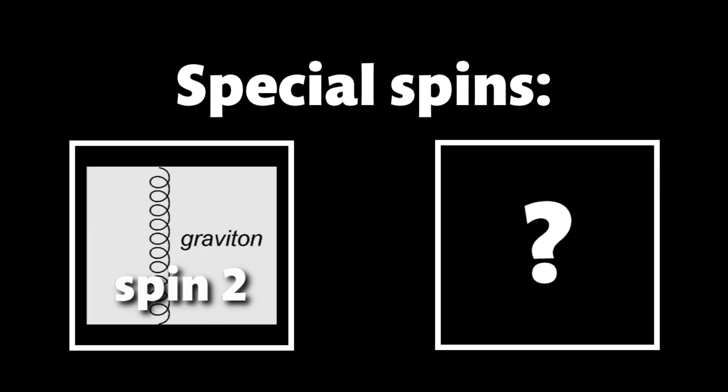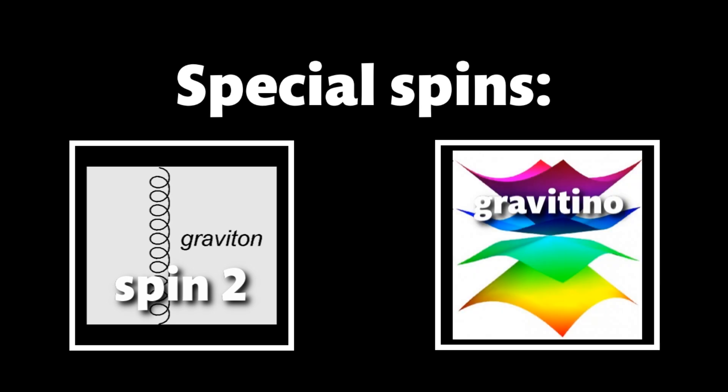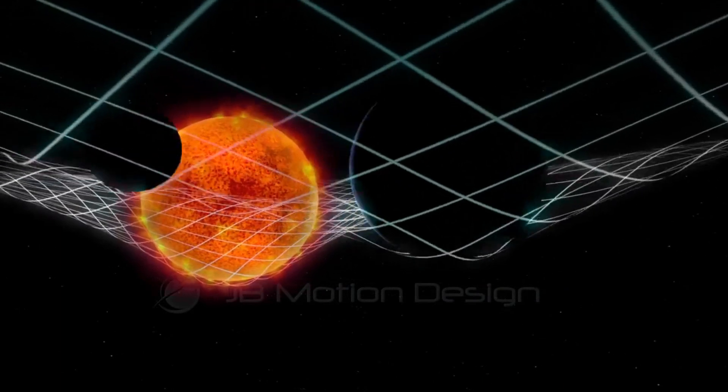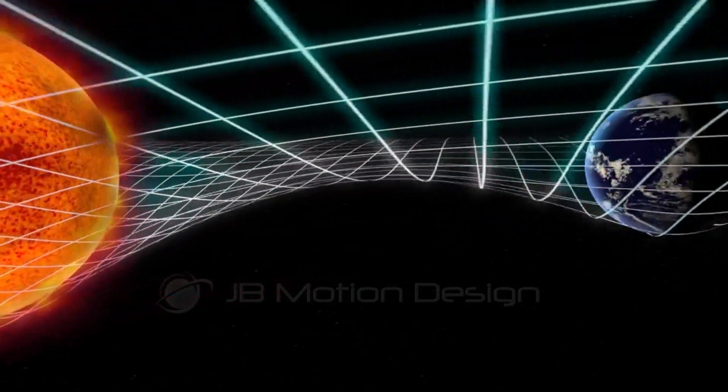In addition to just having spins of negative, positive, or zero, there are also two special particles with different spins: the graviton with a spin of two, and the gravitino with a spin of three halves. These particles are hypothetical and are believed to be responsible for gravity and dark matter.